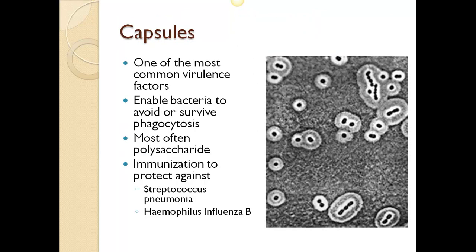The first virulence factor is the ability to form a capsule — one of the more common things bacteria do. This enables bacteria to avoid or survive phagocytosis. We are immunized to protect against some of these capsulated types of organisms. This can be seen in diplococcal or streptococcal findings, where we see these little capsules around the organisms.